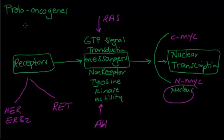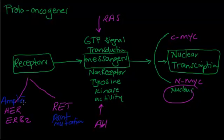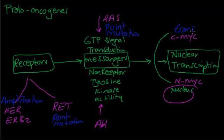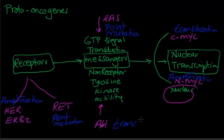Every proto-oncogene has a problem that converts it into an oncogene. The RET gene undergoes point mutation. ERBB2 has an amplification problem. RAS also undergoes point mutation. C-Myc undergoes translocation, N-Myc undergoes amplification, and ABL undergoes translocation abnormality.